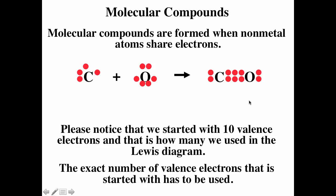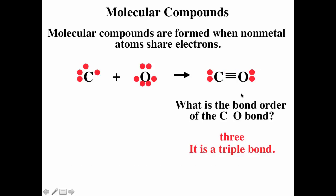Carbon and oxygen have a triple bond — they're sharing six electrons — giving a bond order of three. Remember, you start with a number of valence electrons and that's exactly equal to the number you use. We started with ten valence electrons and used ten. Each line represents a pair of electrons, so the bond order is one, two, three — a triple bond. All triple bonds have bond orders of three.